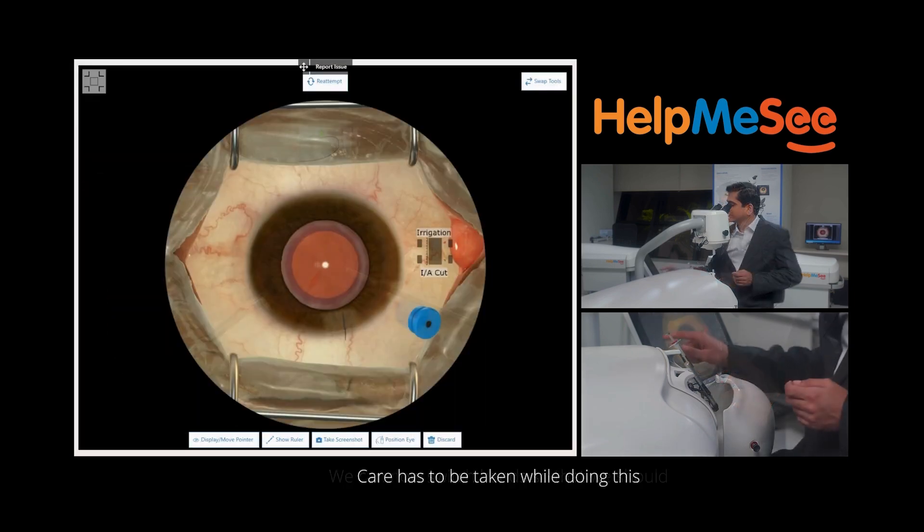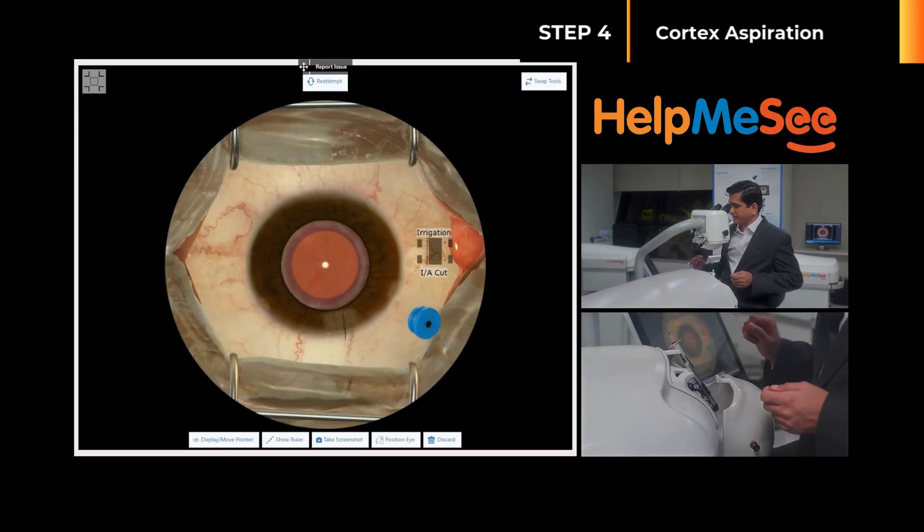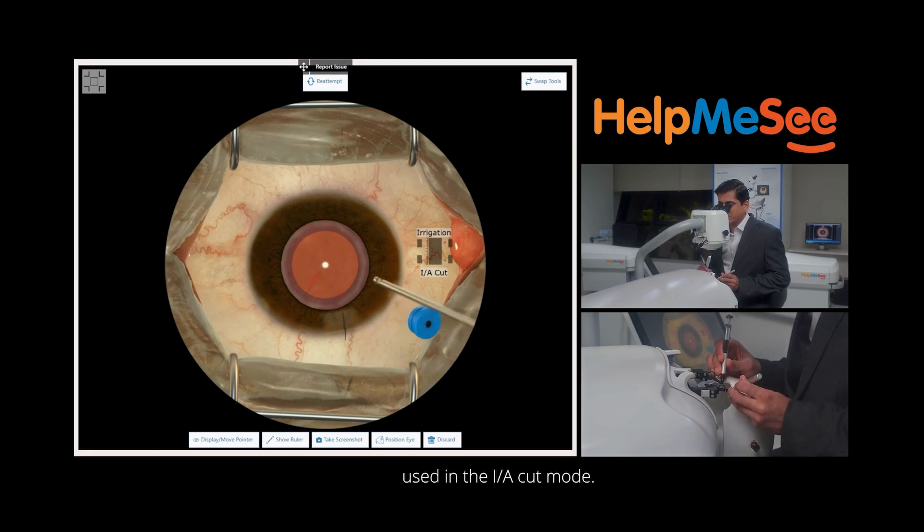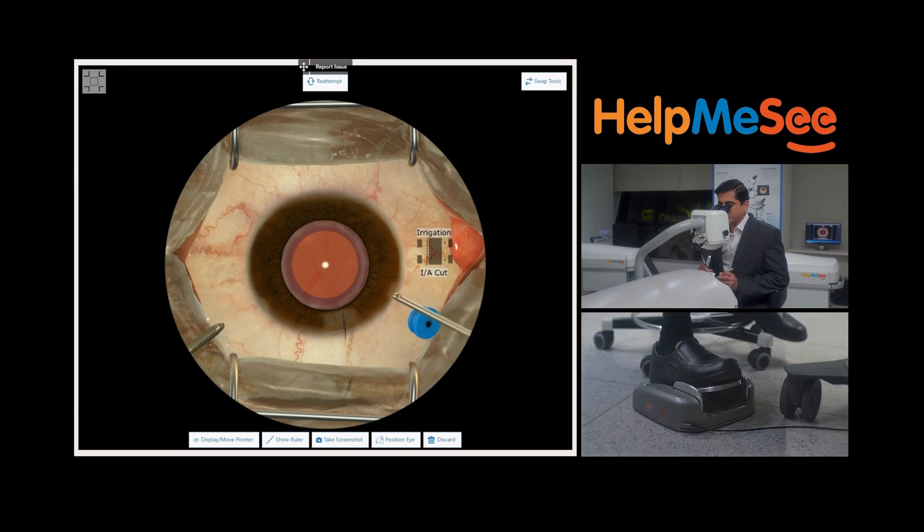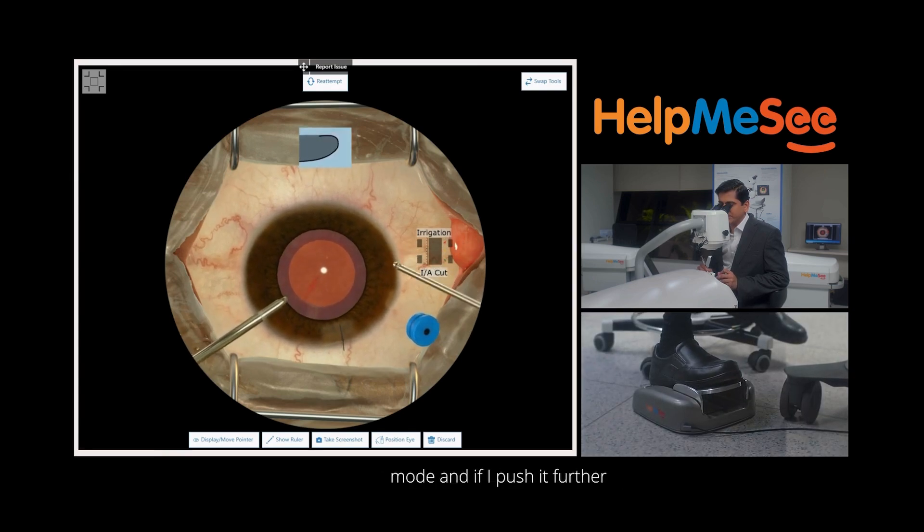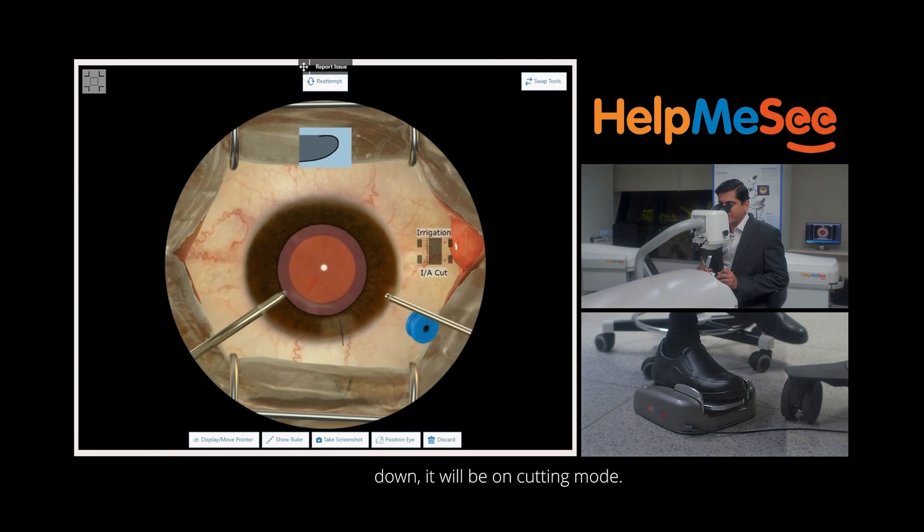Care has to be taken while doing this step because we might damage the anterior capsular rim with the cutter. The cutter is going to be used in the eye cut mode. When I first push the foot pedal it will be on aspiration mode and if I push it further down it will be on cutting mode.